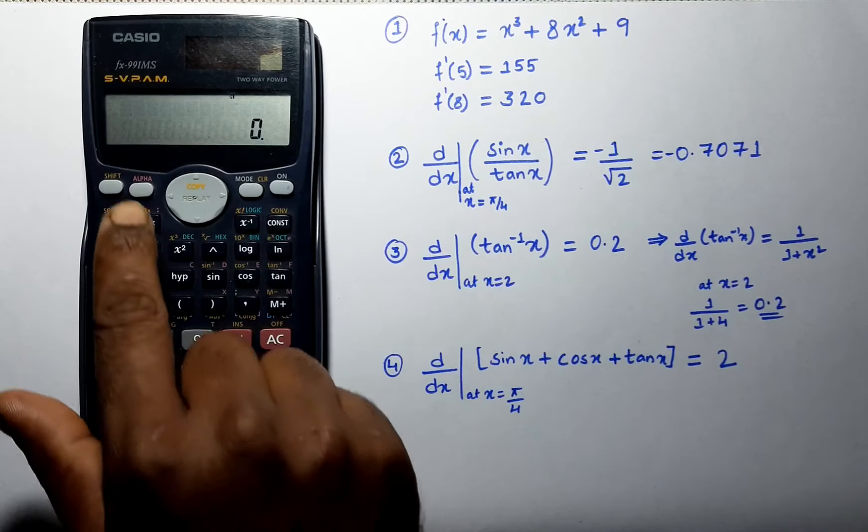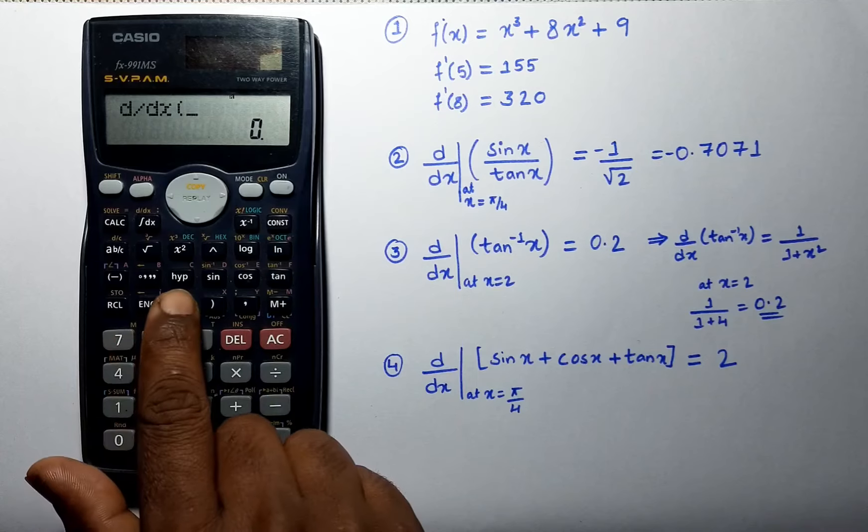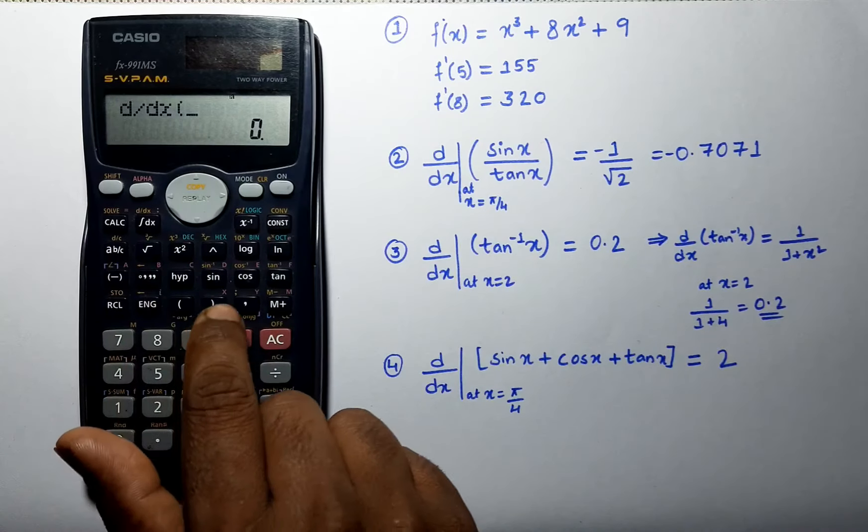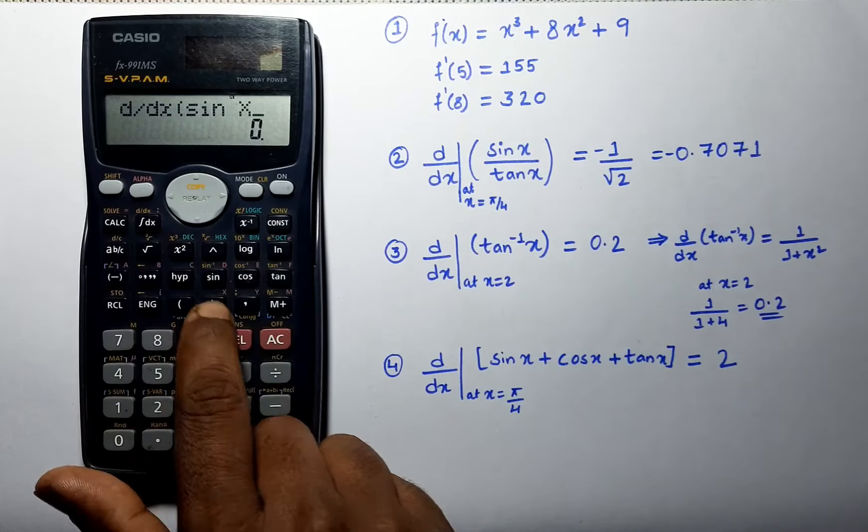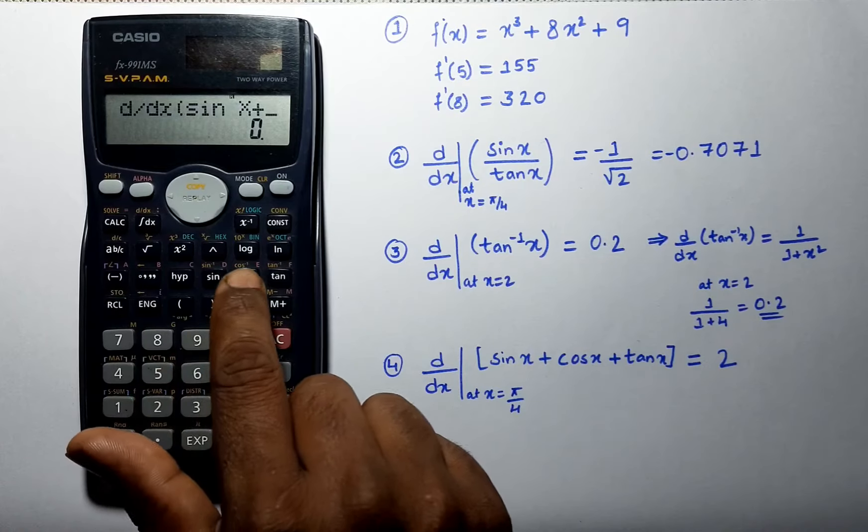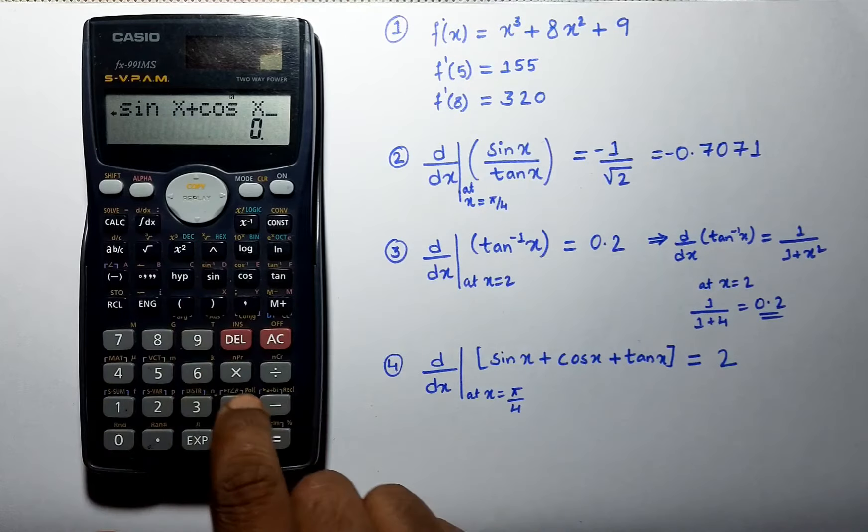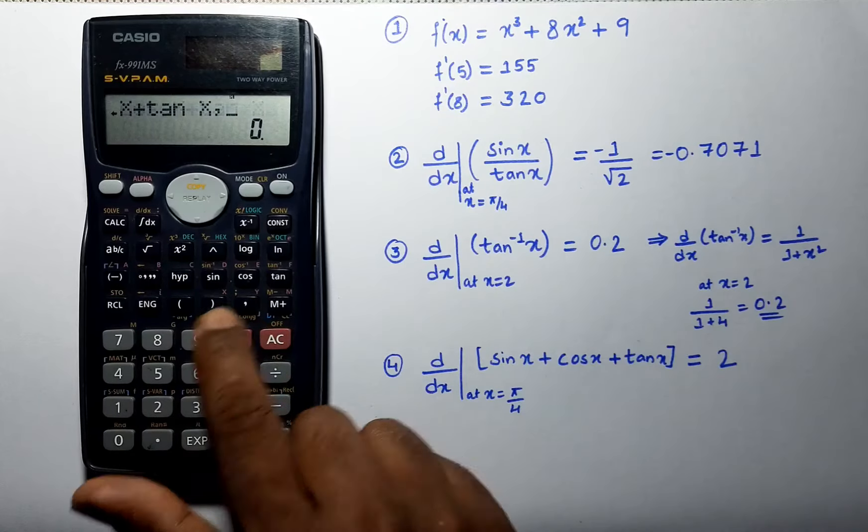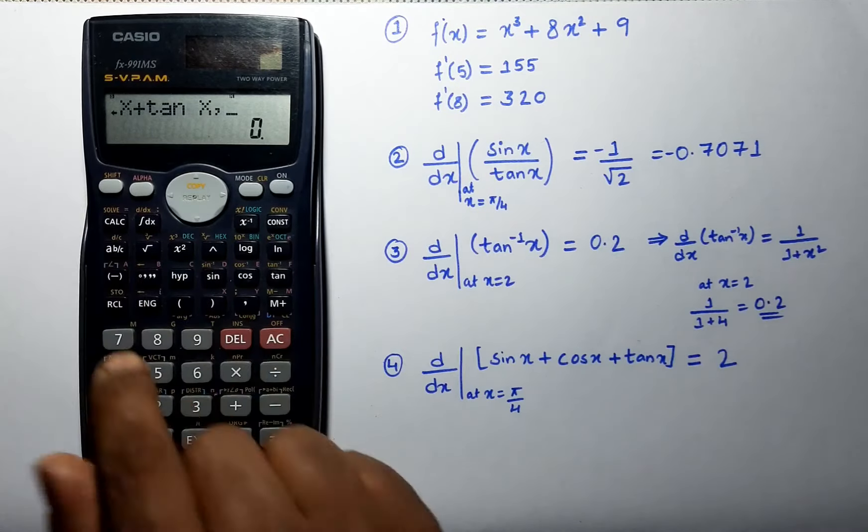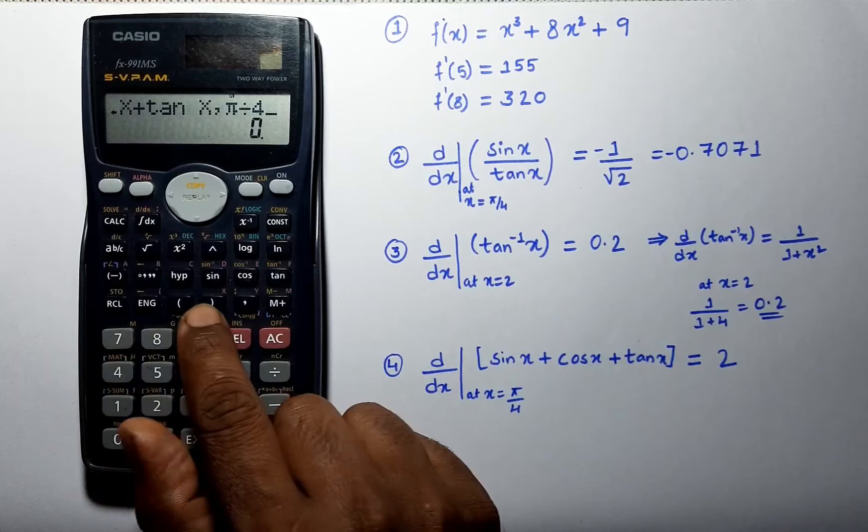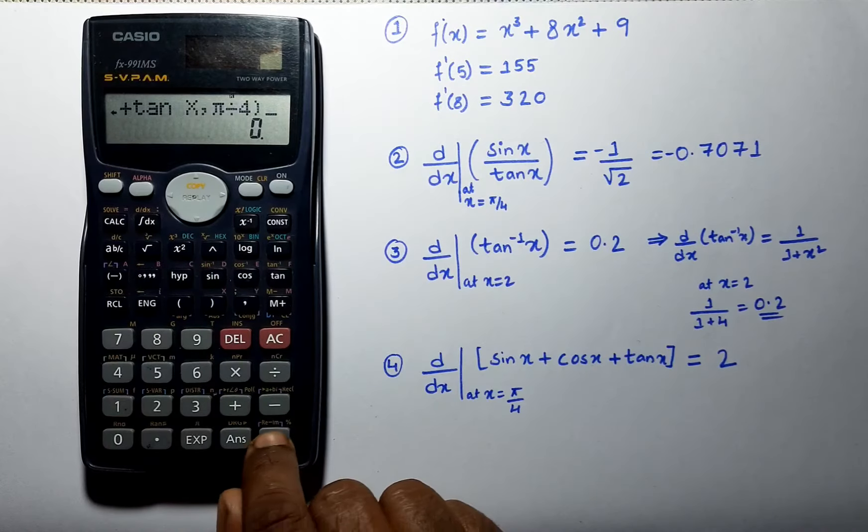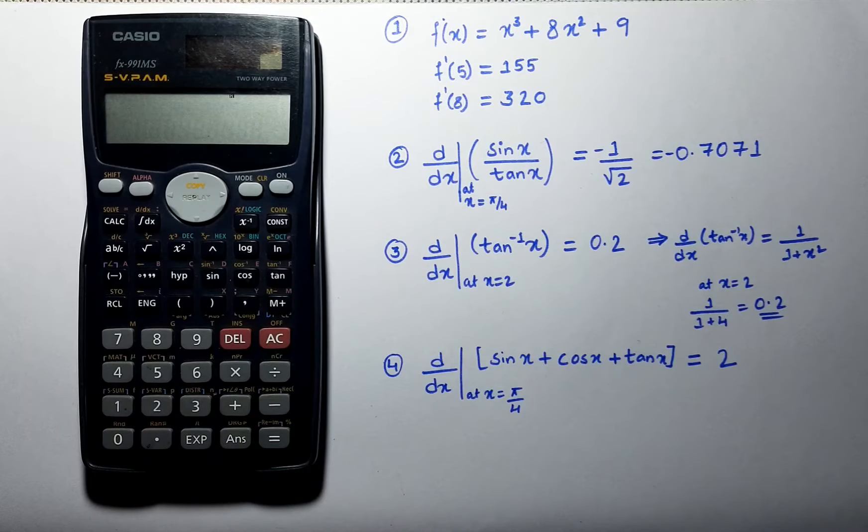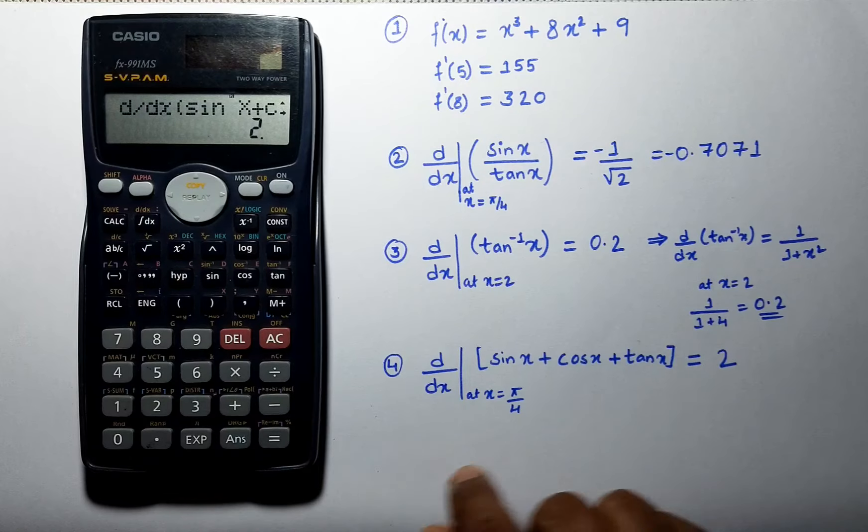Let us solve next problem: d by dx of sin x plus cos x plus tan x at a point pi by 4. We can see its answer is 2.